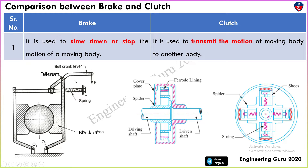In this figure, we can see one type of brake and a centrifugal clutch. The brake is mostly used to stop the motion of a moving body, while the clutch is used to transmit motion from one body to another body.